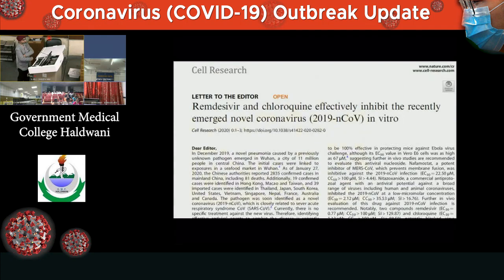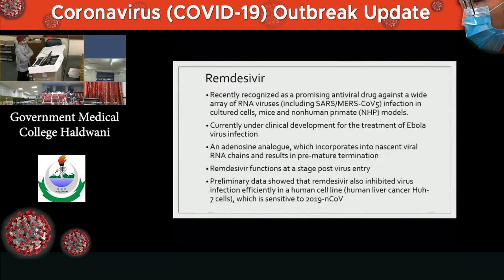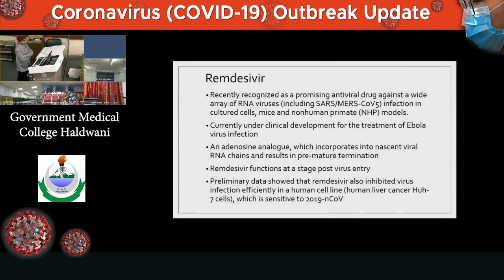Two drugs being tried for novel coronavirus infection are remdesivir and chloroquine. Remdesivir is an adenosine analog — a promising antiviral drug against a wide range of RNA viruses, including SARS and MERS coronavirus infections. It incorporates into viral RNA chains and results in premature termination of viral RNA replication, functioning at the post-viral entry stage. Preliminary data show that remdesivir also inhibits viral infection efficiency in human cell lines, and it has been approved for clinical trials in these patients.